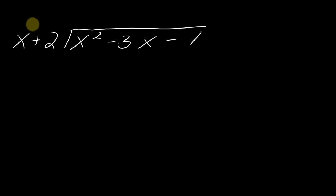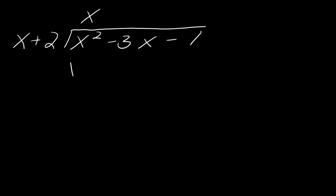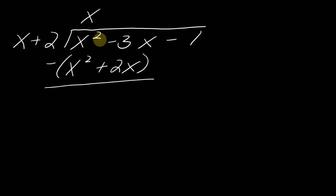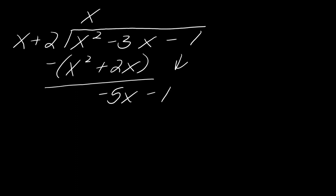So what I want to do is think about just the first terms here: x and x squared. Specifically, what do I multiply x by to get x squared? You multiply x by x — x times x equals x squared. So then you take x times this whole thing here. x times x is x squared; x times 2 is 2x. And then you subtract this entire result off. Now if I subtract this off, the x squareds cancel out. Don't forget about the minus sign — I've got negative 3x minus 2x, that gives me negative 5x. Then I bring down the negative 1 and start the process over.